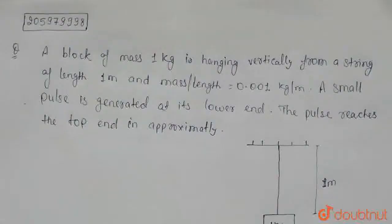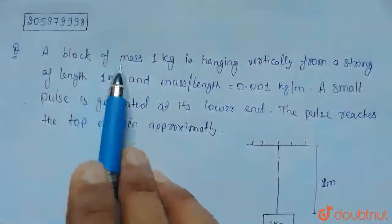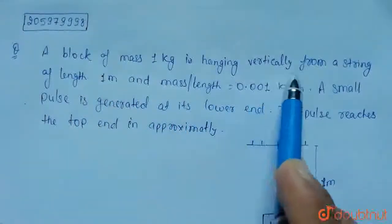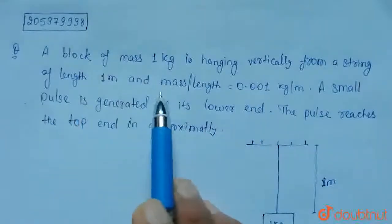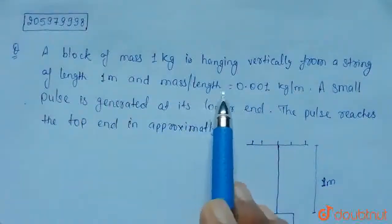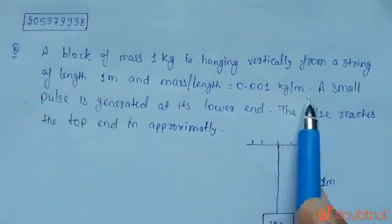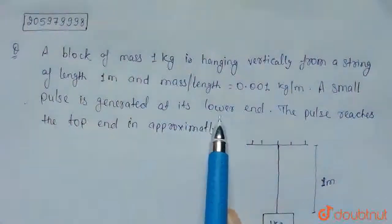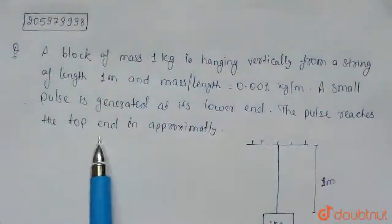Hello student, we have this question here. A block of mass 1 kg is hanging vertically from a string of length 1 meter and mass per unit length of string is 0.001 kg per meter. A small pulse is generated at its lower end. The pulse reaches the top end in approximately?